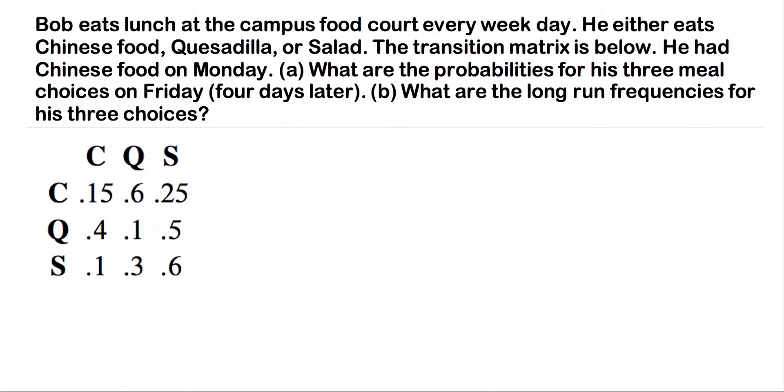We're given this transition matrix already, so anytime we're given a transition matrix, let's just label it P, and they've pretty much told us what we're looking for. We want his choices on Friday, four days later.